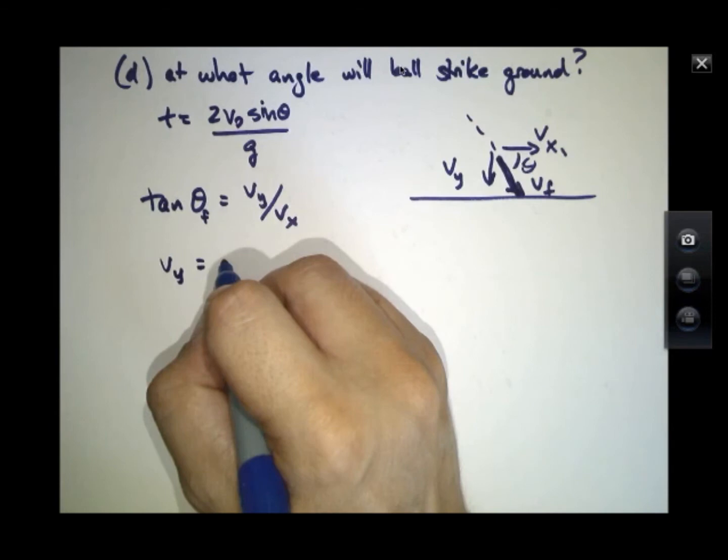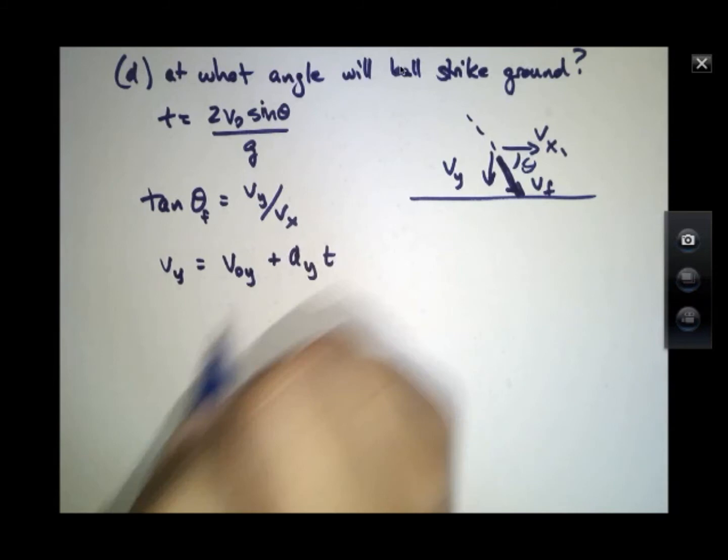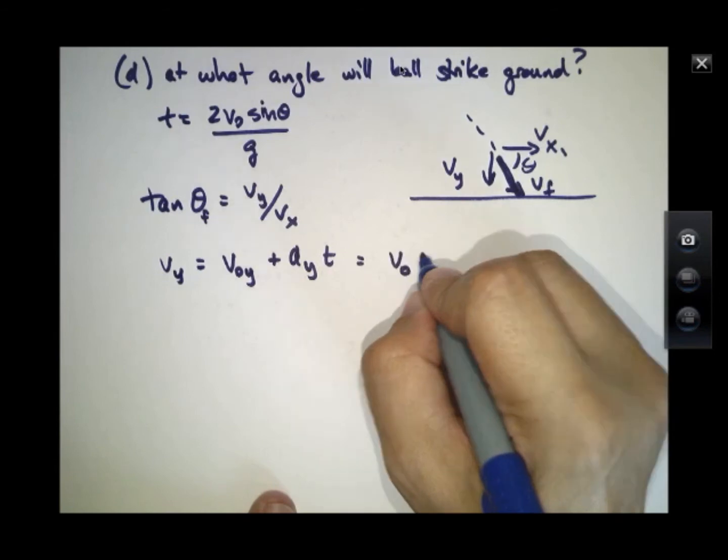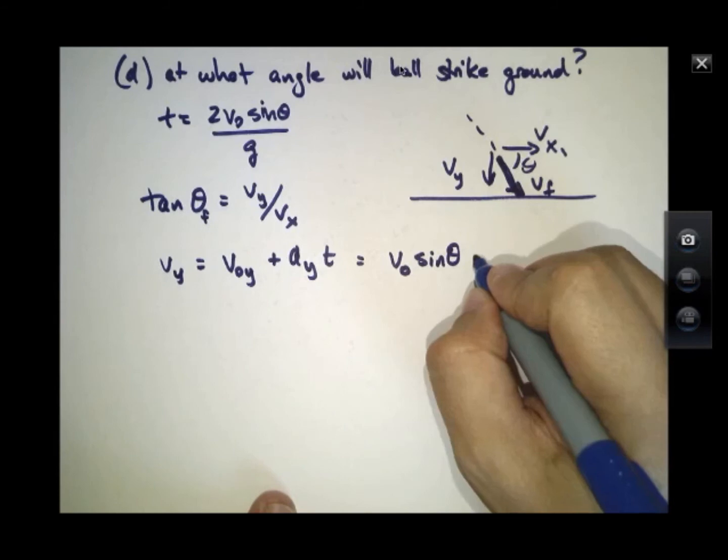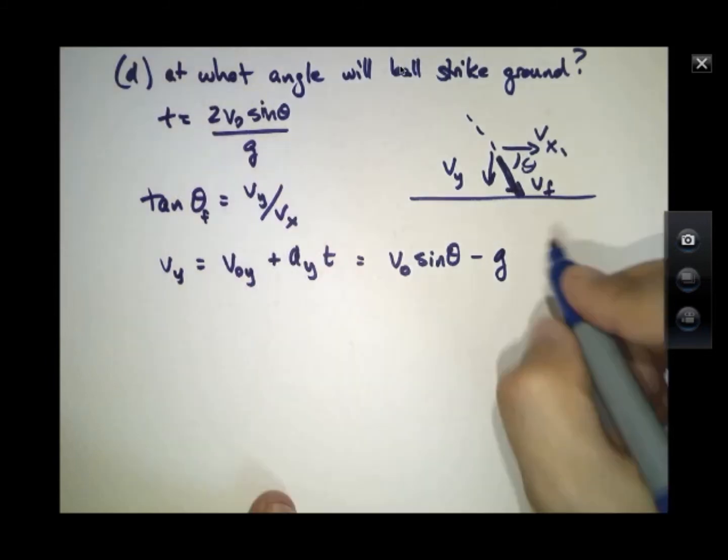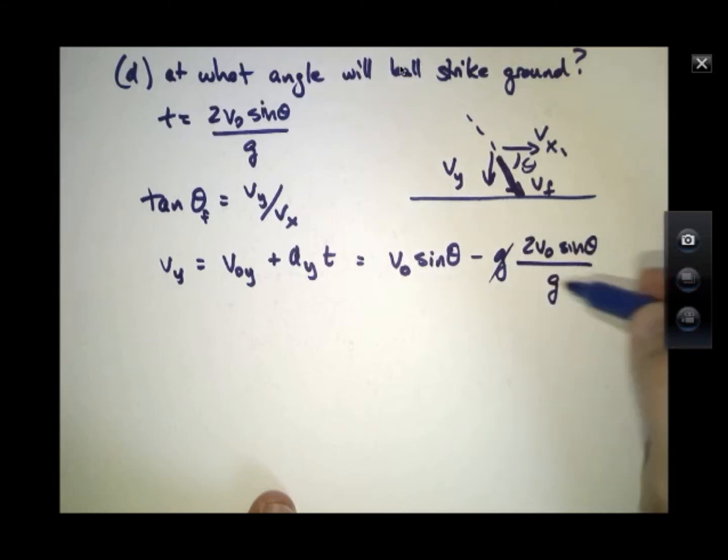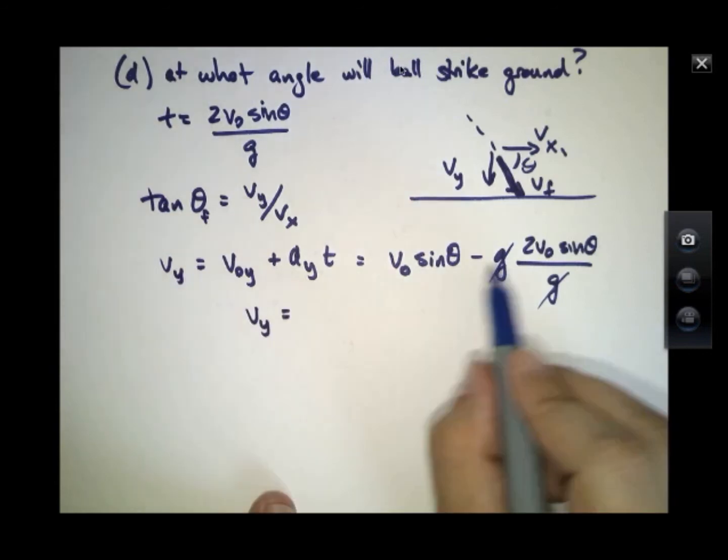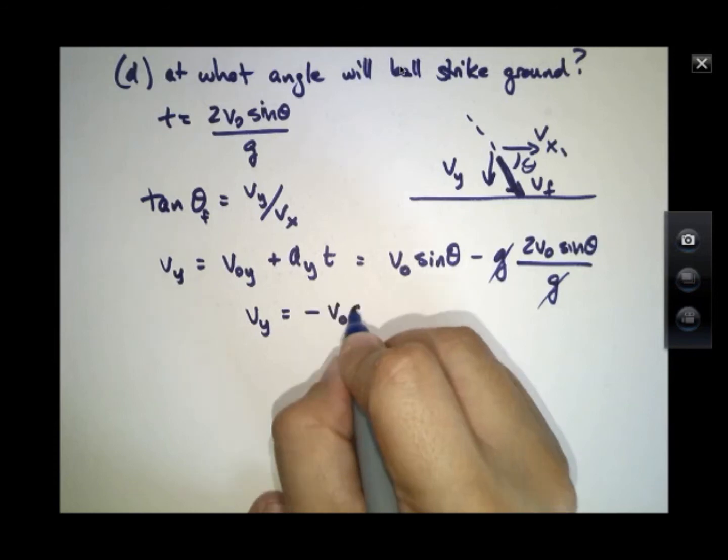Vy is equal to V0y plus Ayt. And in this case, V0y is V0 sine theta, and Ayt, well, the Ay is minus G, and that time is 2V0 sine theta over G. Notice that this G and that G cancel. And I find that Vy is V0 sine theta minus 2V0 sine theta, which is just minus V0 sine theta.